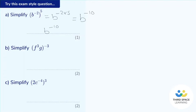Pause the video and have a go at Part B. Let's have a look — there's a little more going on here. We need to be careful to apply the negative three outside those brackets to everything inside the brackets. We've got f to the power of three and g to the power of one — always the power of one. Let's deal with these terms separately, starting with the f. This is f to the power of three, and we're going to apply the third law and multiply the power by the power outside the bracket.